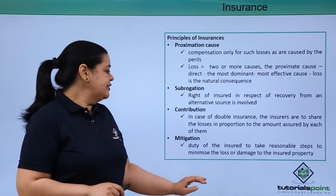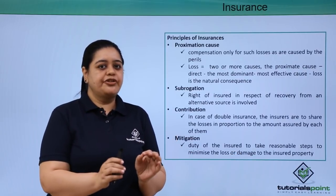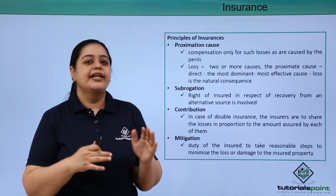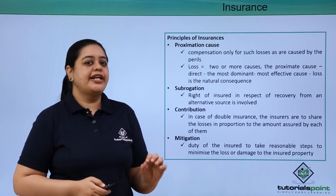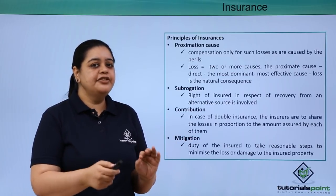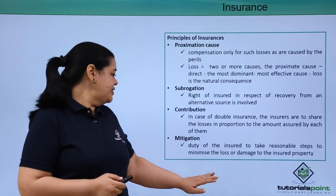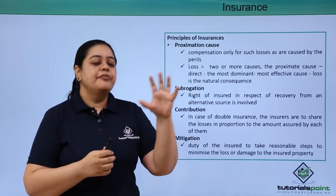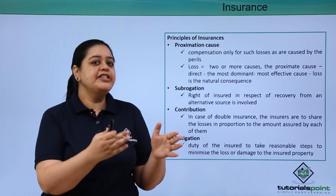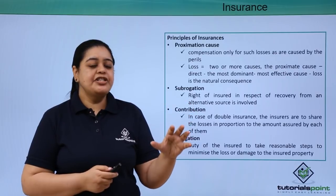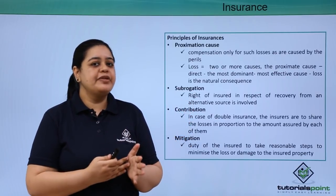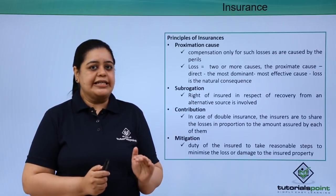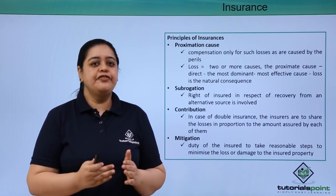The final principle is mitigation. Just because your goods are insured doesn't mean you do nothing if a fire happens — you cannot simply sit back and relax because you have insurance. You must take proper steps for the safety of the insured goods and take reasonable steps to minimize the loss. For example, if there is a fire, you must call firefighters and use the firefighting equipment available in your warehouse to reduce the damage. Mitigation means you take steps to ensure the loss is minimized. This brings us to the end of the principles — in the next video, we will cover the types.